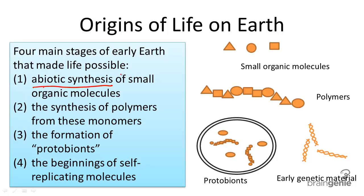If you could remember the early conditions of the atmosphere on planet Earth, the conditions were extremely harsh. There was a great deal of lightning, UV radiation, and different gaseous elements were available, such as hydrogen, methane, water, and ammonia. These molecules were available in the atmosphere.